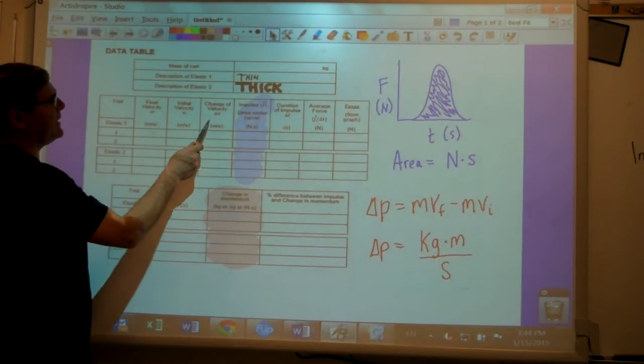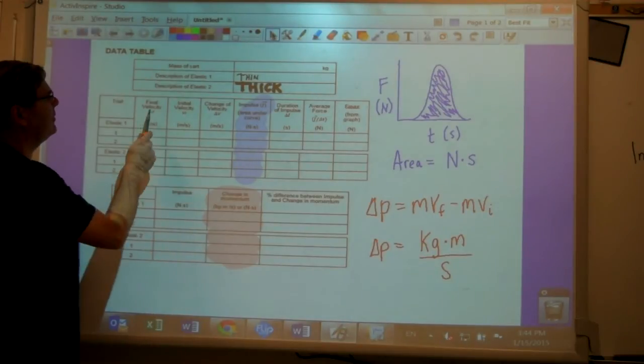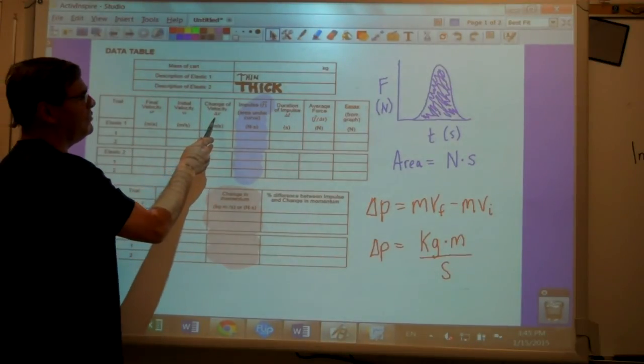Then here's where you fill in your information from your force sensor and your motion detector. Wherever you see meters per second, that's going to be the velocity of the cart, final velocity, initial velocity, and the difference of the two.